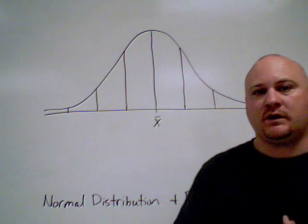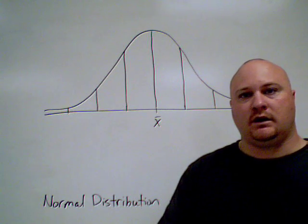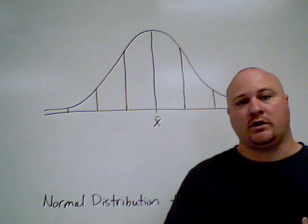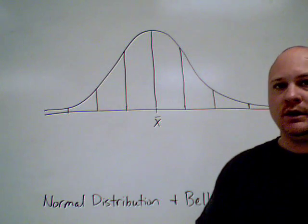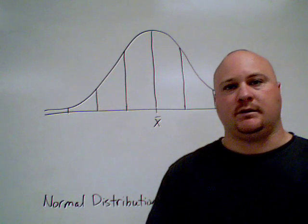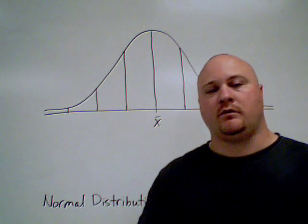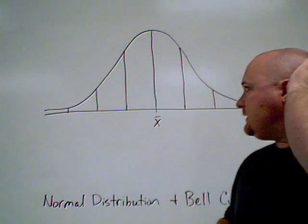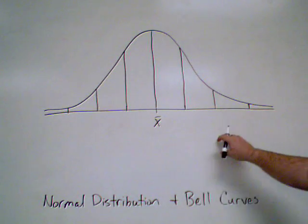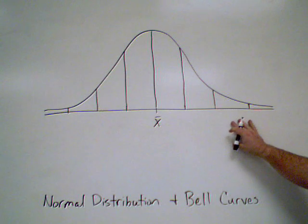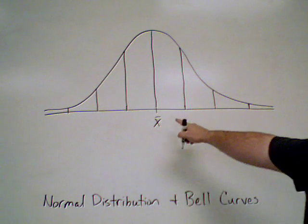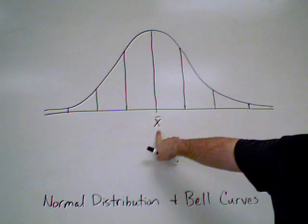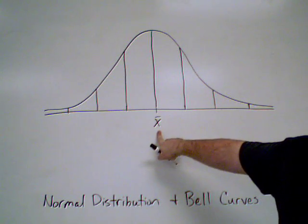We want to talk about the bell curve and normal distribution. It's a tricky subject, so we want to go through it one more time. This is our bell curve — it is a symmetrical curve, and the middle is right at x-bar, which is our mean.